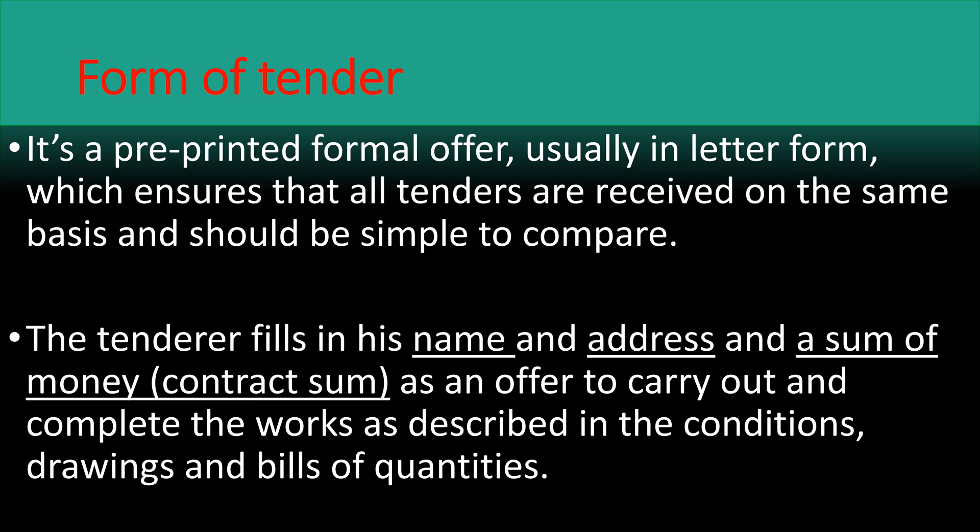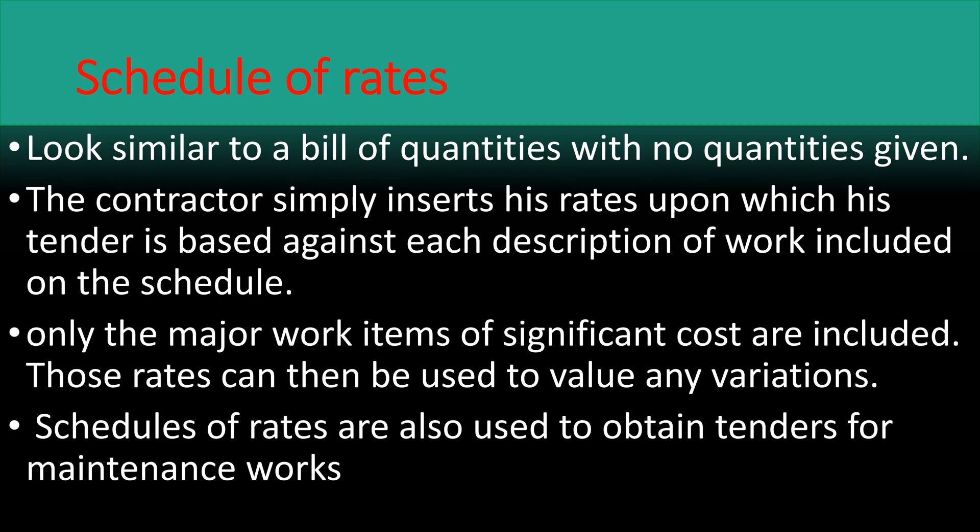The fifth document is the schedule of rates. In appearance, they are similar to a page of bill of quantities without any quantities given. The contractor simply inserts his rates, upon which the tender is based, against each description of work included on the schedule. In practice, only the major work items of significant cost and value are included. Those rates can then be used to value any variations. Schedule of rates are also used to obtain tenders for maintenance works. The difference between the BQ and the schedule of rates is that the schedule of rates does not have the unit rates filled in — the contractor fills those in, so that we can compare between different contractors and award the tender.